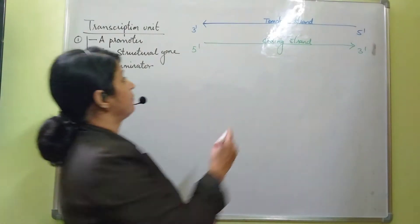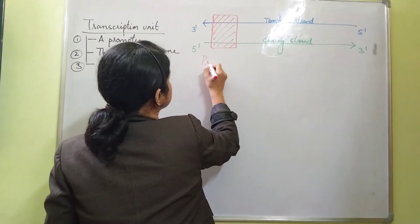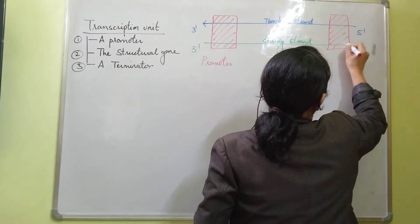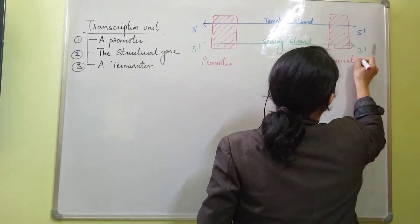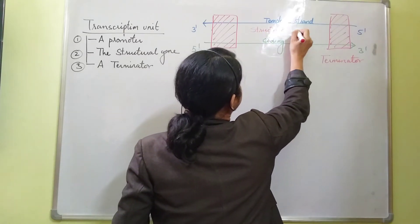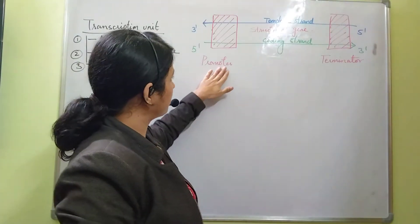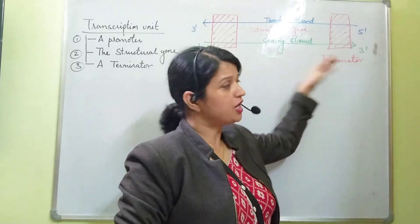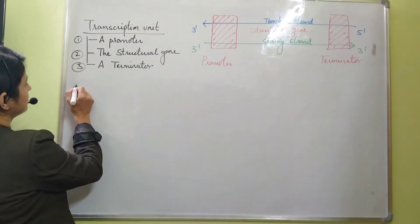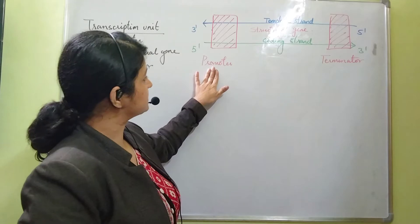The next important part is the promoter. Here is the promoter and here is present the terminator. In between the promoter and terminator is present the structural gene. As we discussed, a transcription unit contains three parts or three regions: promoter, structural gene, and the terminator. Now we will discuss all these three sites in detail.